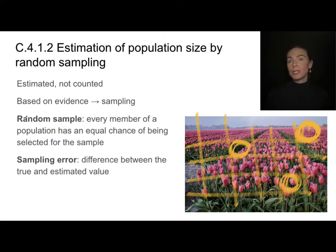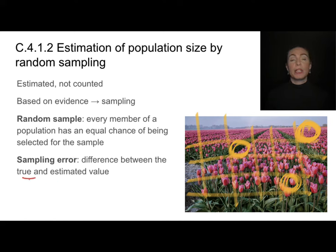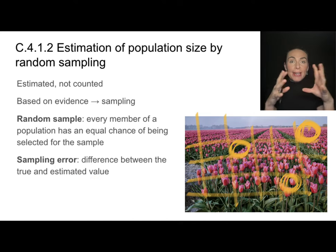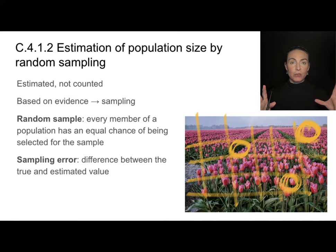We will always have a certain degree of sampling error, which is the difference between the true and estimated value. The larger your sample — the greater the proportion of individuals that you count — the smaller your sampling error will be.